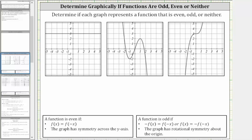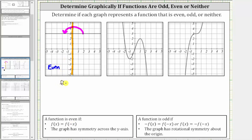Looking at the first graph, notice how if we were to fold this graph across the y-axis — let's say we fold it to the left — notice how the two halves match up perfectly, and therefore this graph represents an even function. This also means for all x values, f of x equals f of negative x.